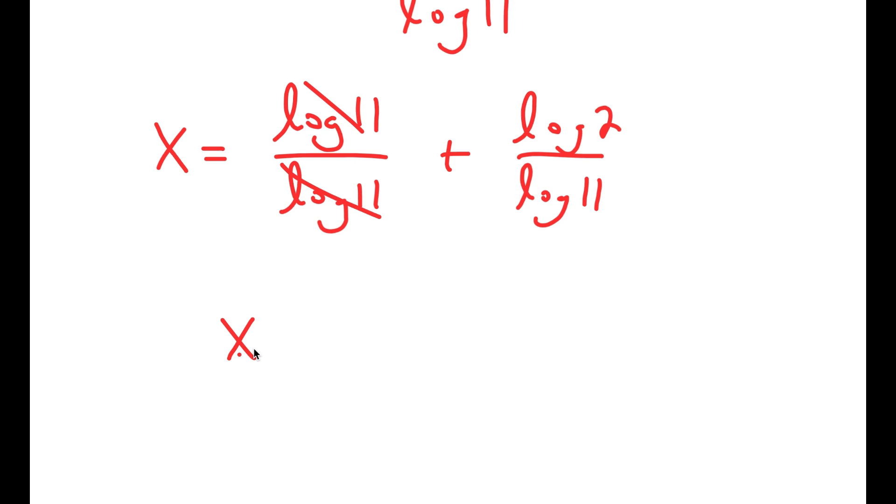So these two cancel out, and I get x equals 1 plus log 2 over log 11.